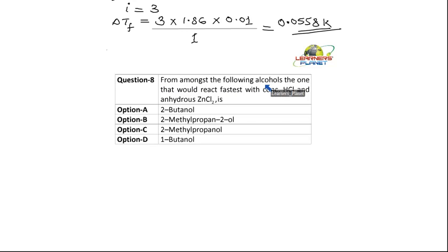From amongst the following alcohols, the one that would react fastest with concentrated HCl and anhydrous ZnCl2 is.